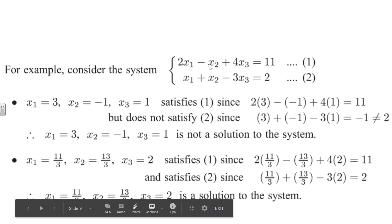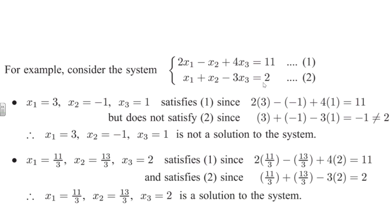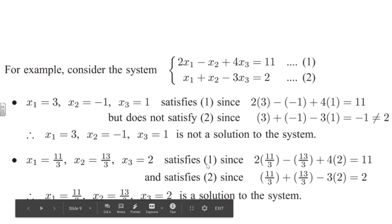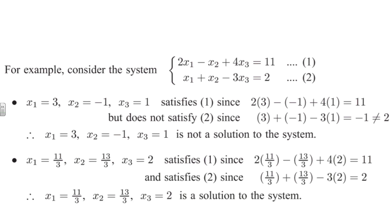So for example, if we have 2x1 minus x2 plus 4x3 equals 11, and x1 plus x2 minus 3x3 equals 2, well we could just check a couple of values. We could check x1 equals 3, x2 equals -1, x3 equals 1, and while that does satisfy the first equation, meaning that the left side equals the right side, it does not satisfy the second equation. And since it doesn't satisfy both, that means it's not a solution to the system. Looking at the second possible solution, we see x1 equals 11/3, x2 equals 13/3, x3 equals 2, and that does satisfy both equations, left side equals right side. Therefore that is a solution to the system.